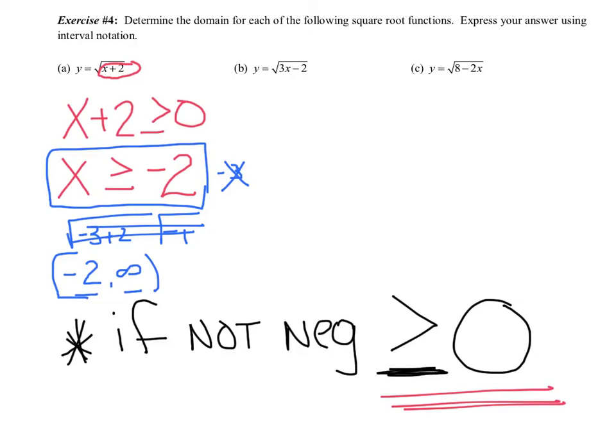Let's try the next one. Whatever is under there, 3x minus 2, has to be positive, which means greater than or equal to 0. Solve. 3x has to be greater than or equal to 2. Divide by 3. x has to be greater than or equal to 2 thirds. So, you may not get a pretty number, but that's okay. That is your domain. All the x values have to be greater than or equal to 2 thirds.